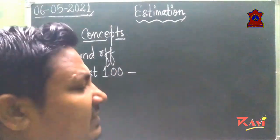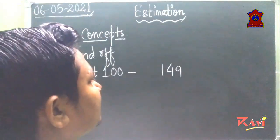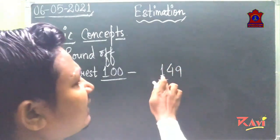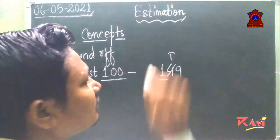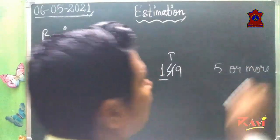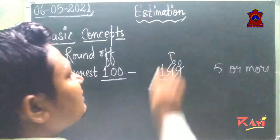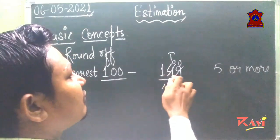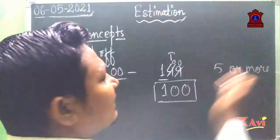Similarly, round off to the nearest hundred. If the number given is 149, we check the hundreds place — there is 1 at hundreds. But before that, what is at the tens place? Four. The rule says there should be five or more to round off. Here we have four, so these two digits become zero and nothing is added. So 149 rounded to the nearest hundred is 100.